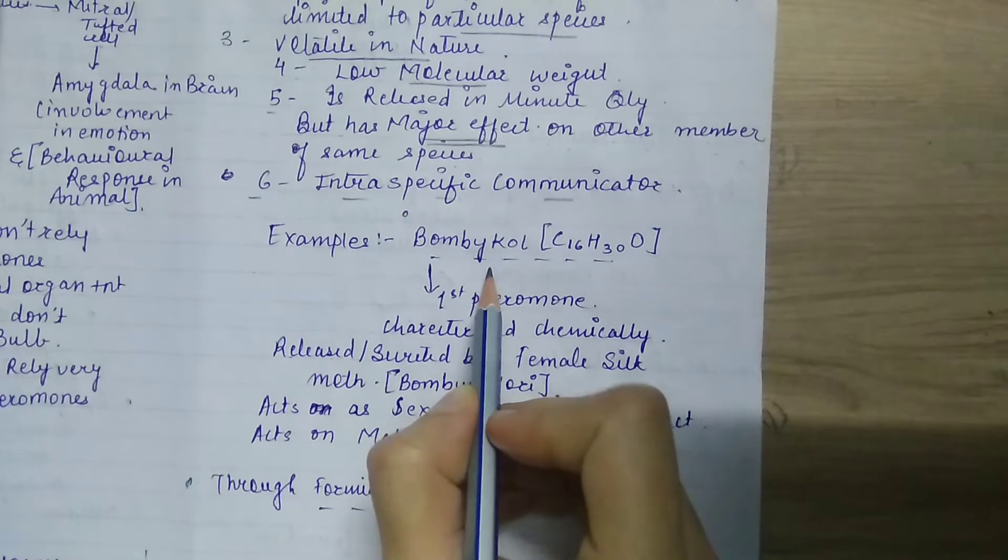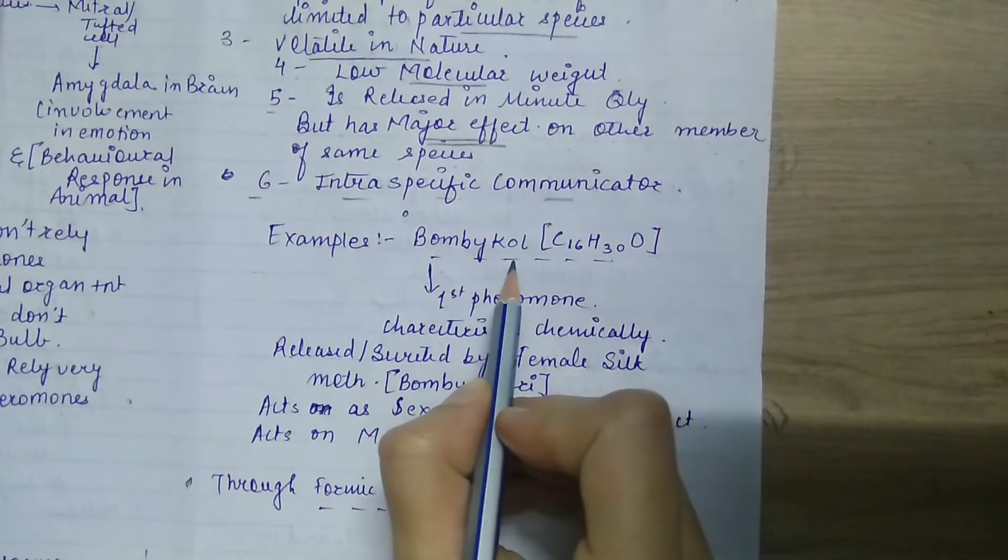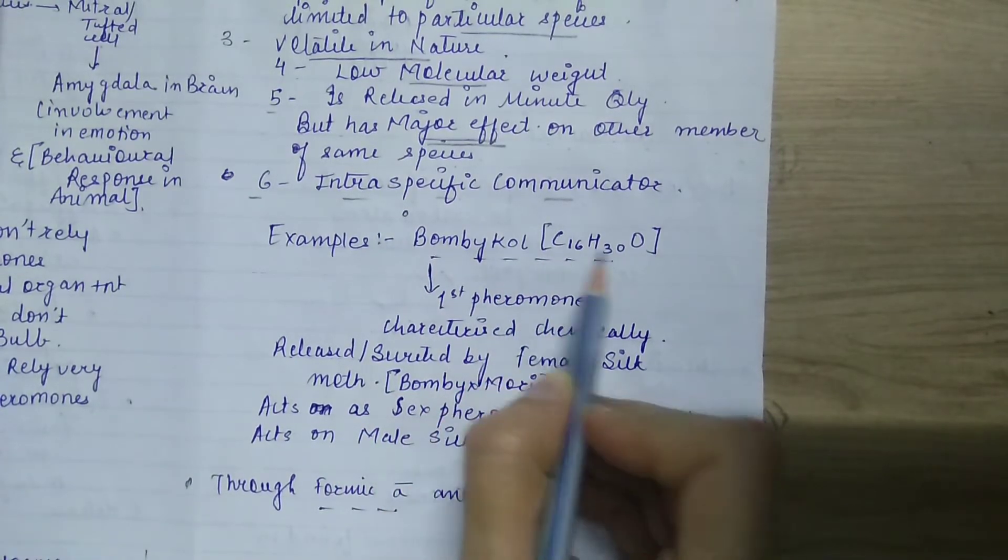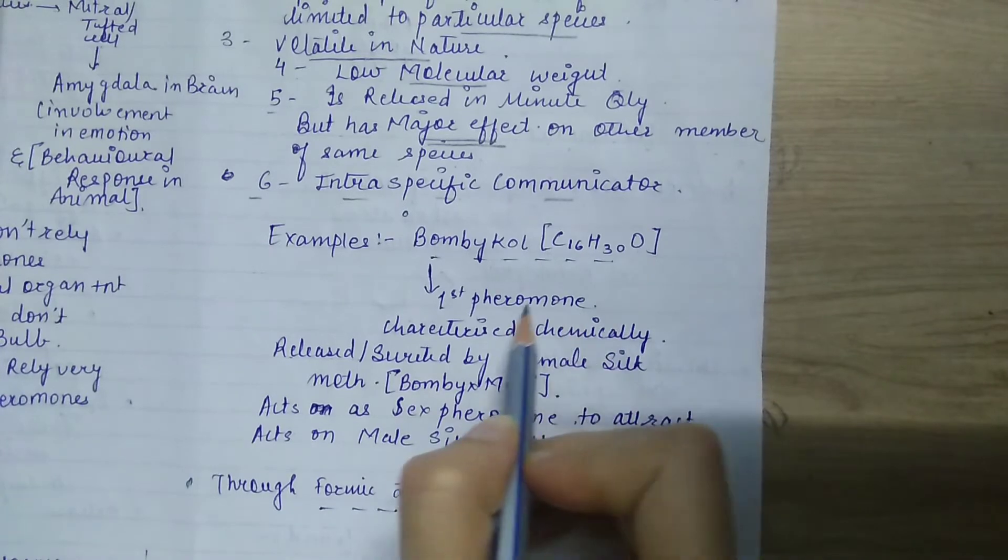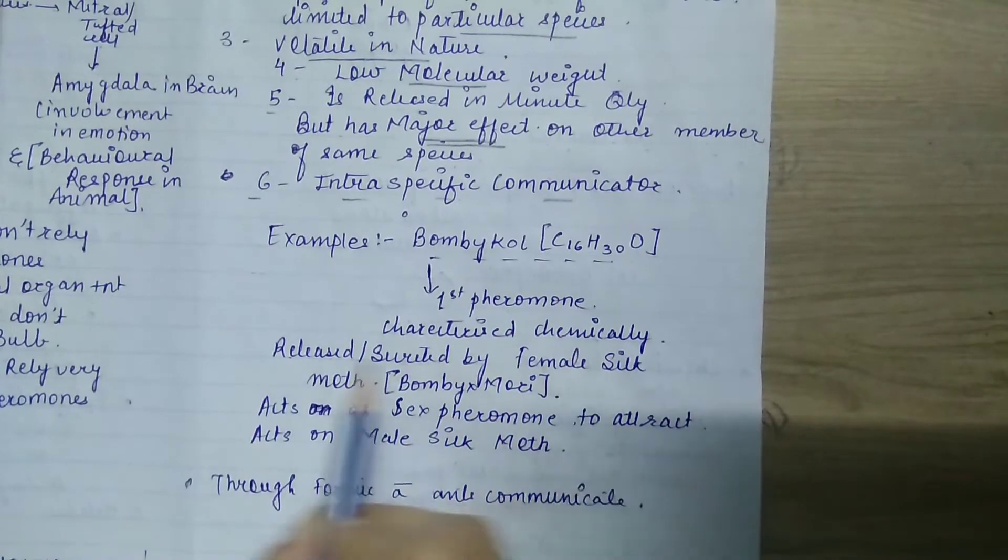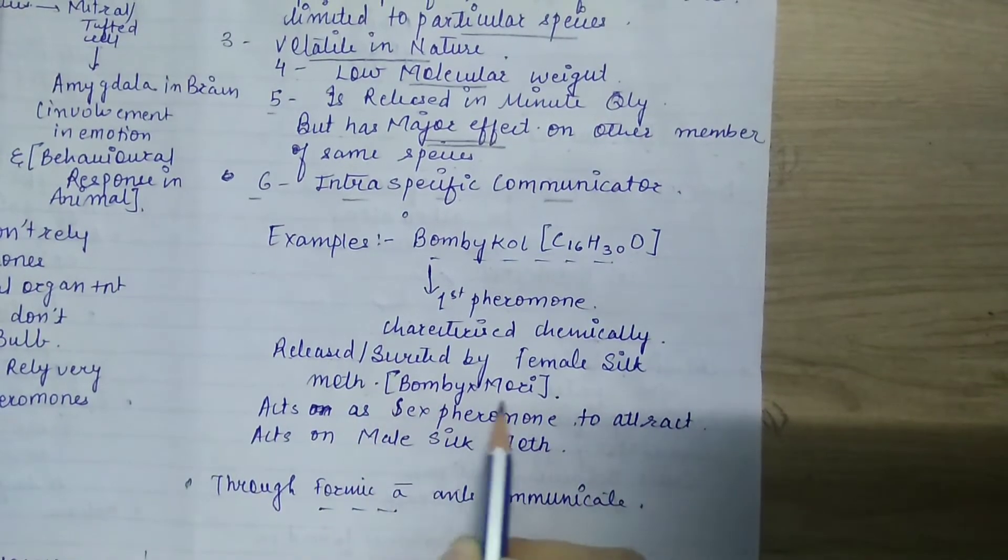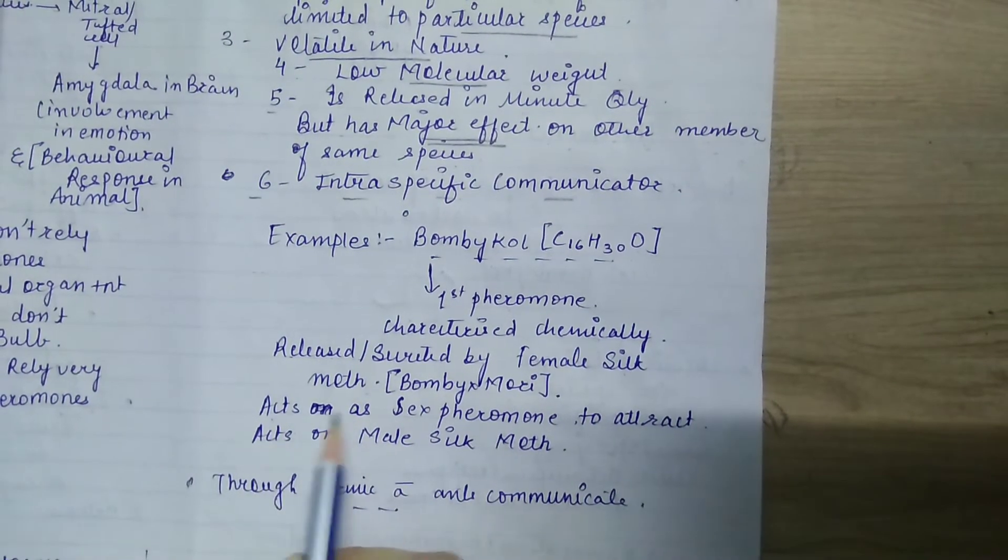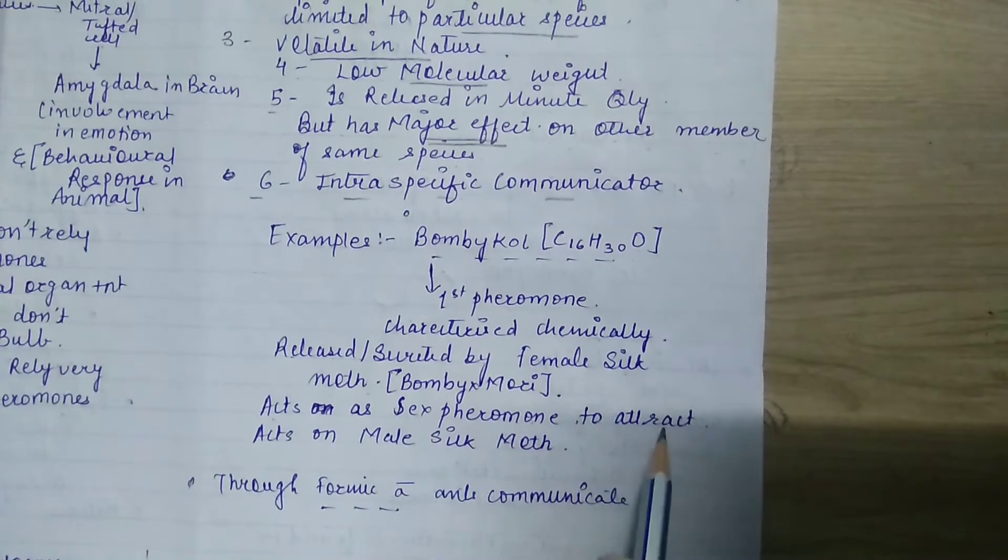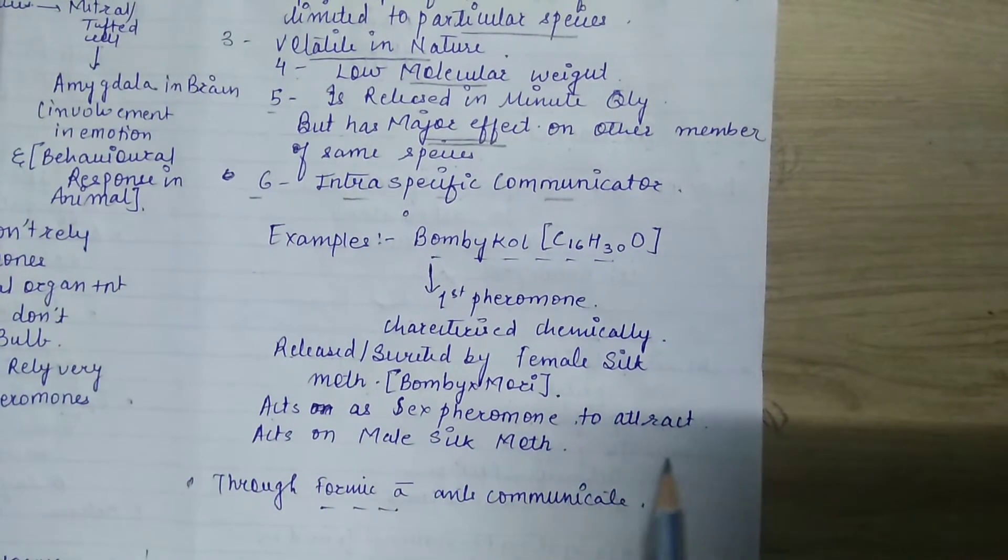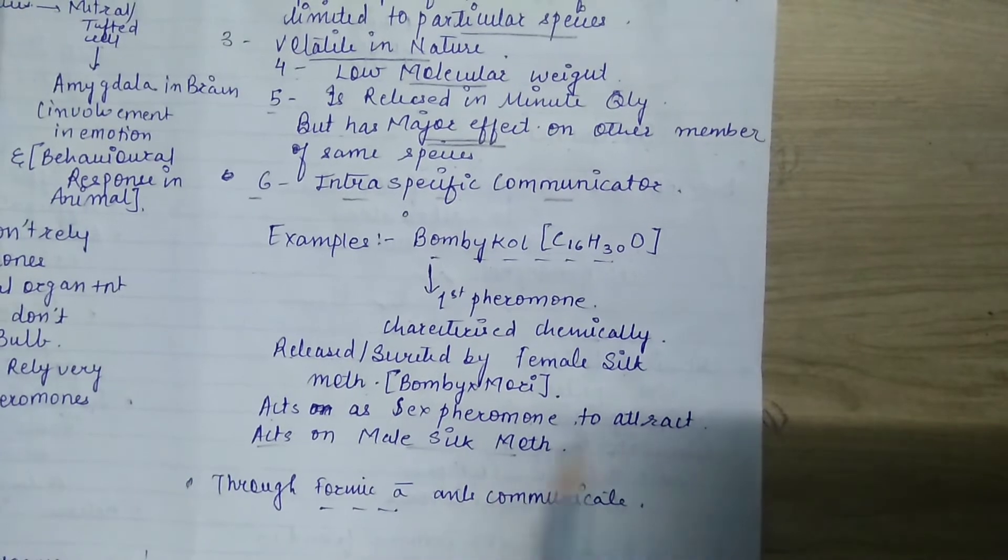The first example is bombicol, formula C16H30O. This was the first pheromone characterized chemically. This is released and secreted by female silk moth, called Bombyx mori. This acts as a sex pheromone to attract male silk moth.